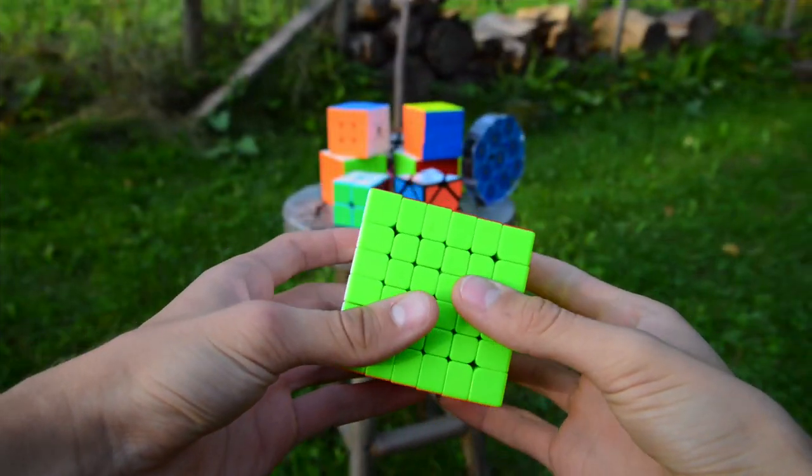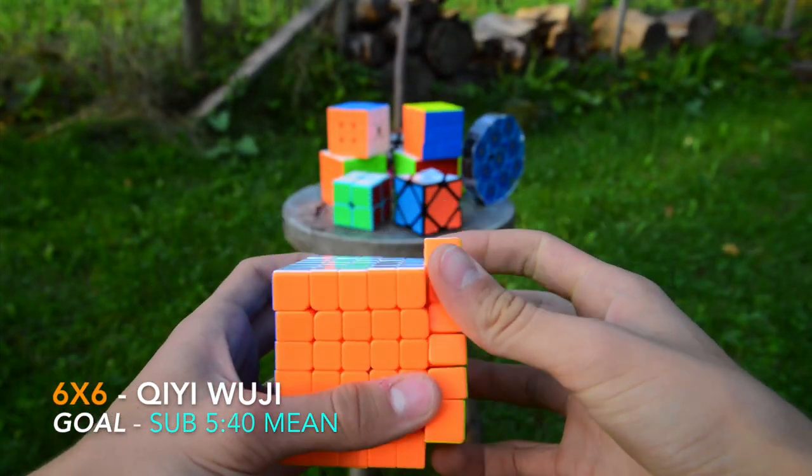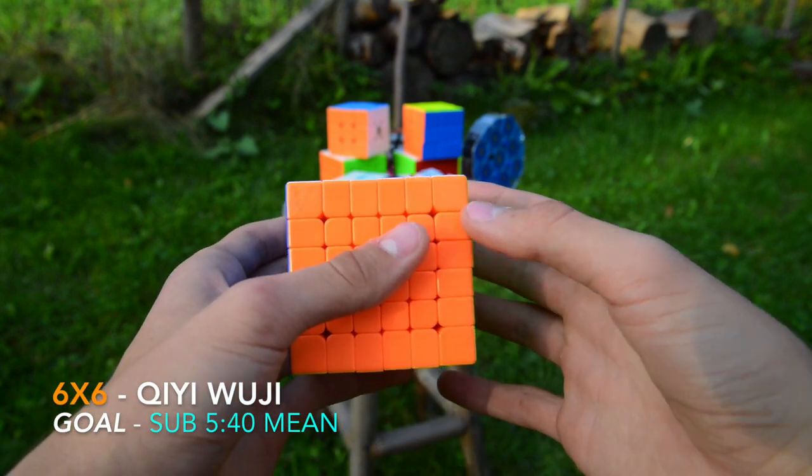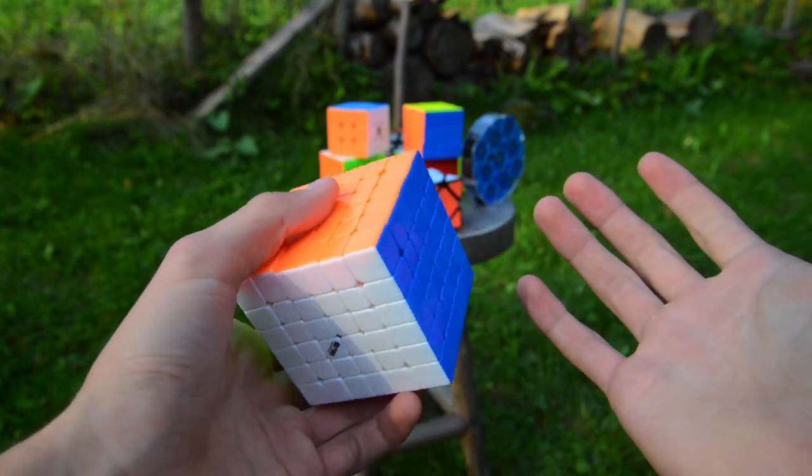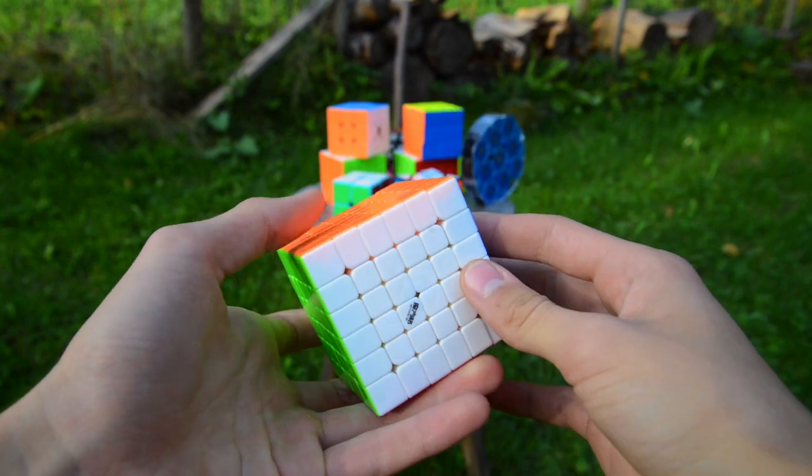Now, the last cube in the cube series is 6x6, and my goal is a sub-6 mean because I actually really like 6x6 when I'm solving it, but it's really boring to practice.